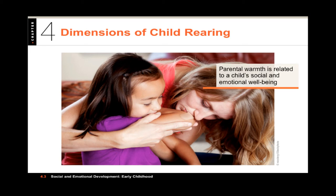The first thing we want to look at is the dimensions of child rearing, where we talk about things like parental warmth. Parents obviously have very different approaches to rearing their children, and researchers have found it useful to classify them in two very broad dimensions. The first is warm versus cold, and the second is restrictive versus permissive.